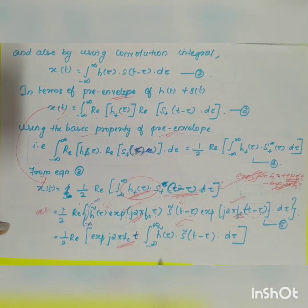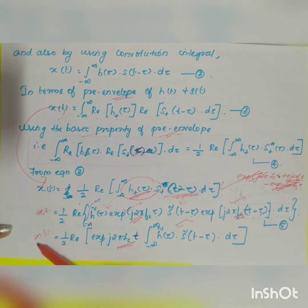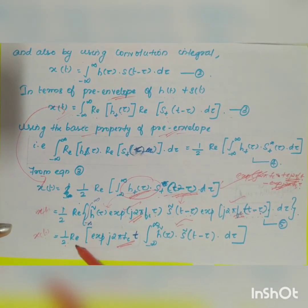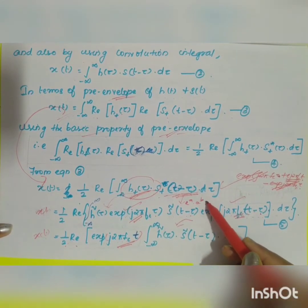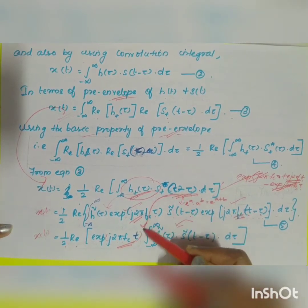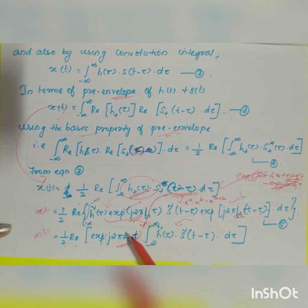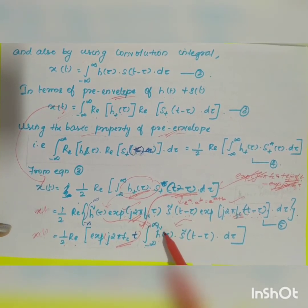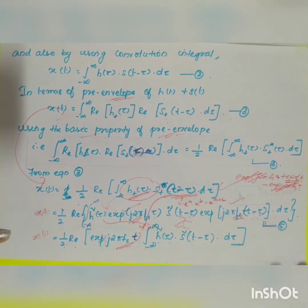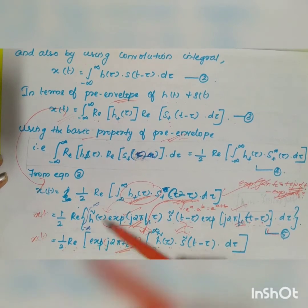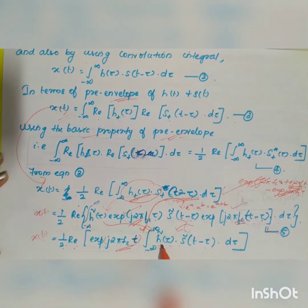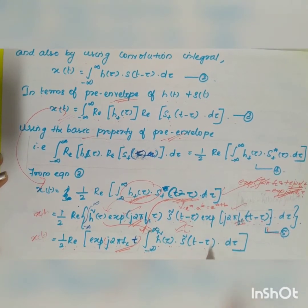So the equation is shortened: x(t) = (1/2) · Re{ e^(j2πfct) · ∫ from −∞ to ∞ of h̃(τ) · s̃(t−τ) dτ } — let us call this Equation 5.